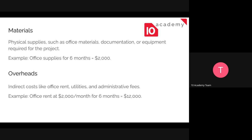Materials cost refers to physical supplies such as office materials — chairs, tables, desktops, accessories, and documentation equipment required for the project. For example, office supplies for six months might have a cost of two thousand dollars.